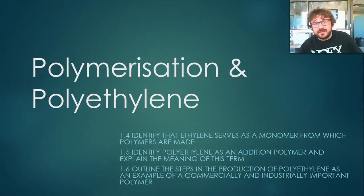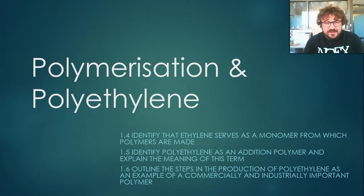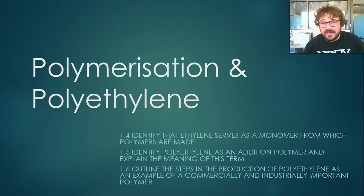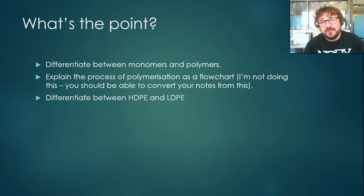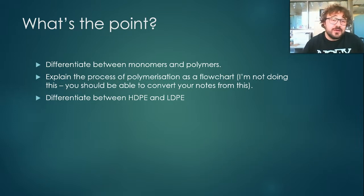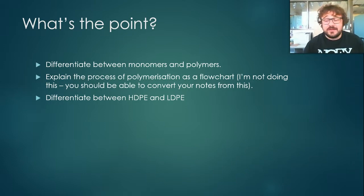Alright guys, so now we get into the nuts and bolts of everything with polymerization and polyethylene. We're going to learn some stuff today that will be a basis for everything we're going to do for the next year. So pay special attention and over the next few videos, make sure you're really taking some solid notes. By the end of this, you should be able to differentiate between a monomer and a polymer, explain the process of polymerization as a flowchart, and differentiate between HDPE and LDPE, which is high density polyethylene and low density polyethylene.